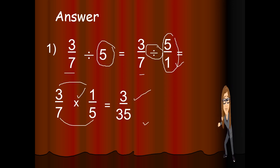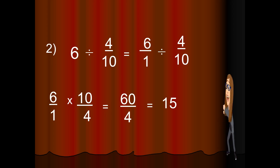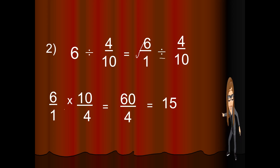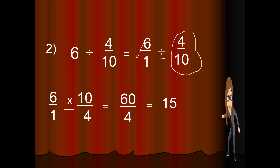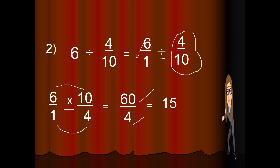Now let's check number 2. We have 6 divided by 4 over 10. You rename 6 as 6 over 1, change the sign to multiplication, get the reciprocal of 4 over 10 which is 10 over 4. Then multiply: 6 times 10 is 60, and 1 times 4 is 4. Divide 60 by 4, which is 15.